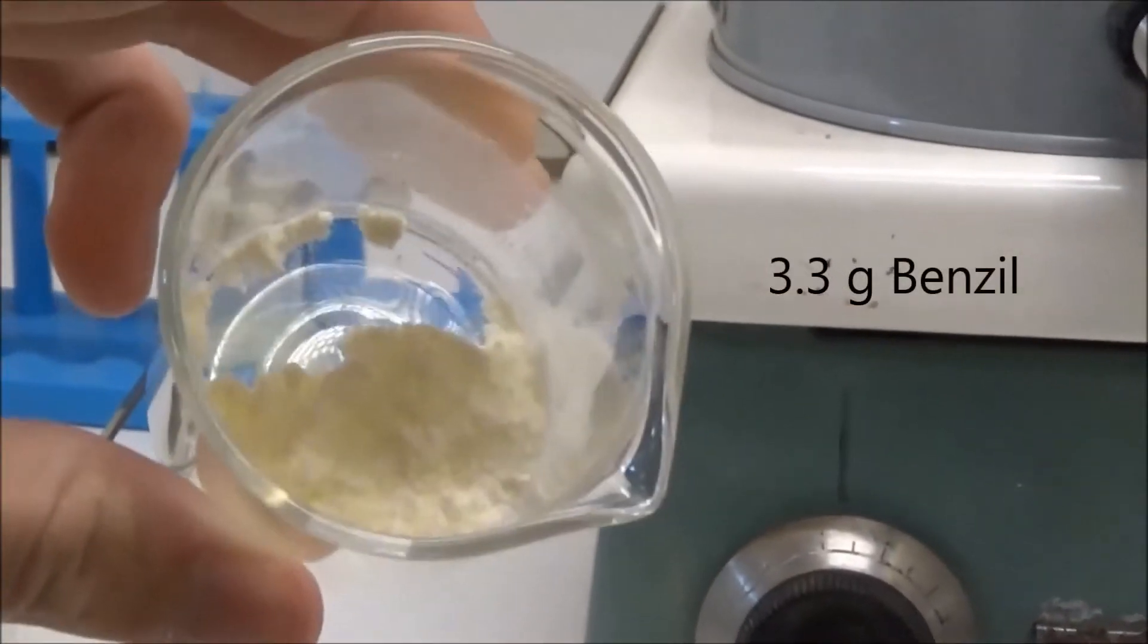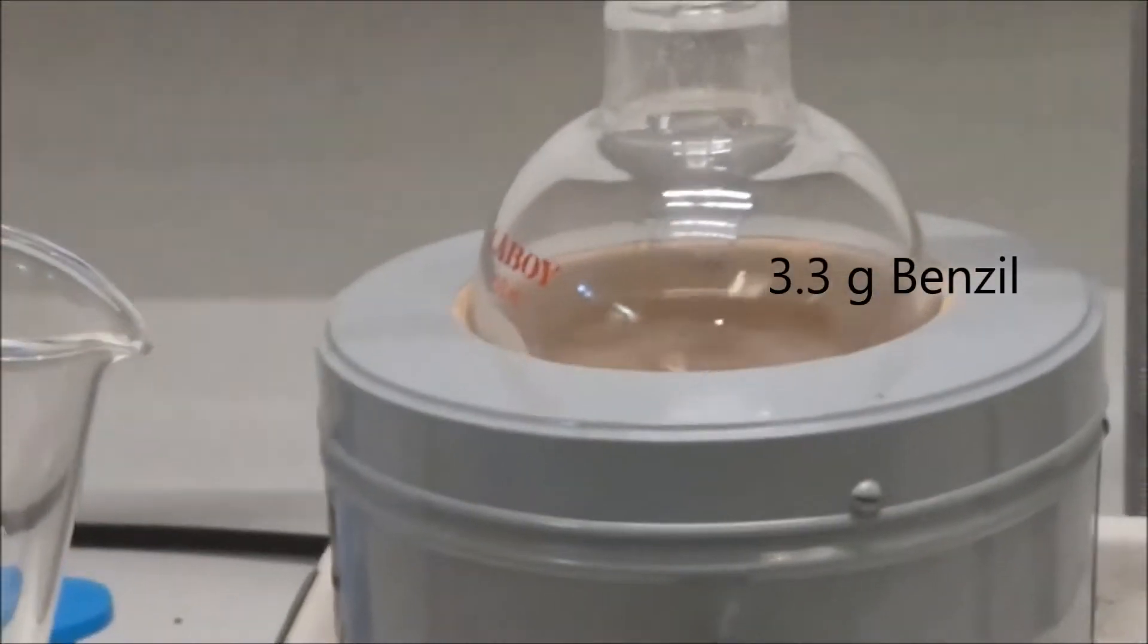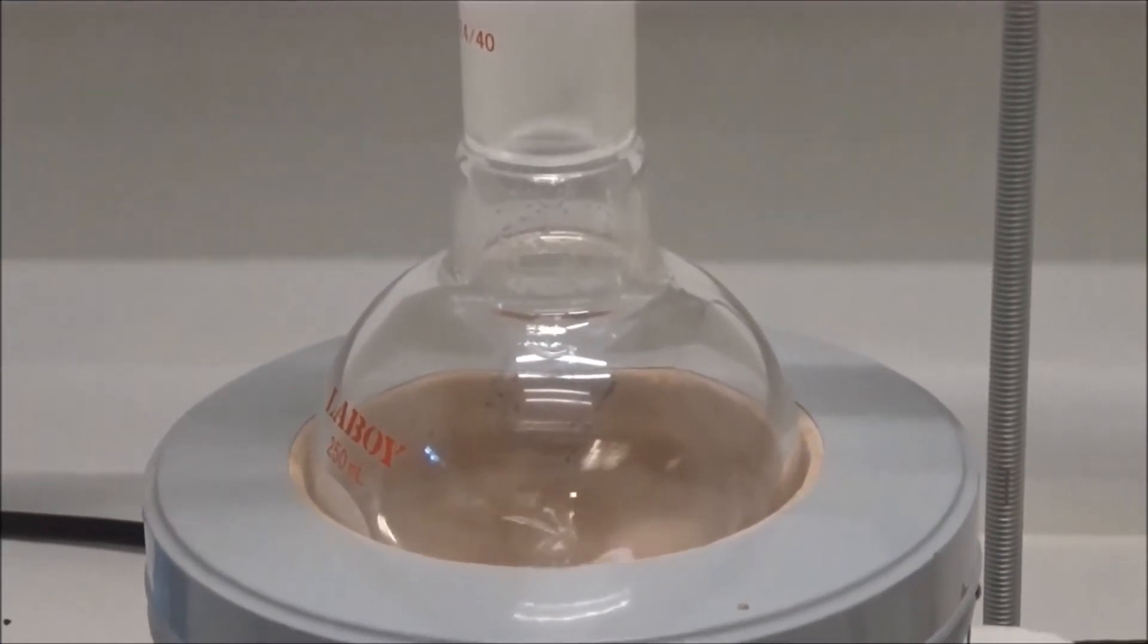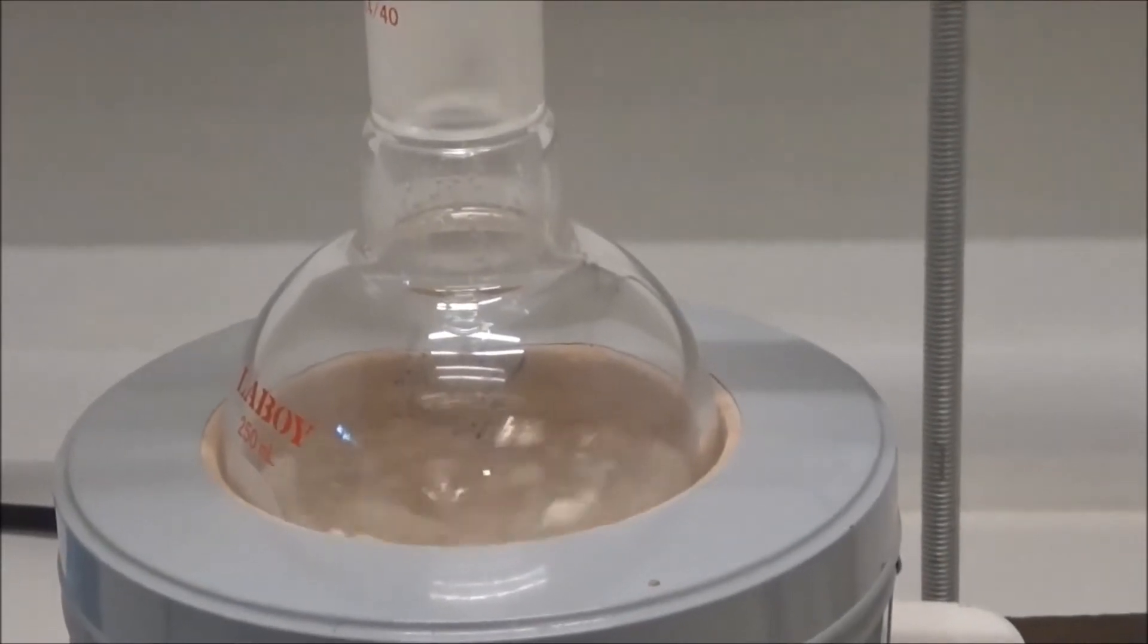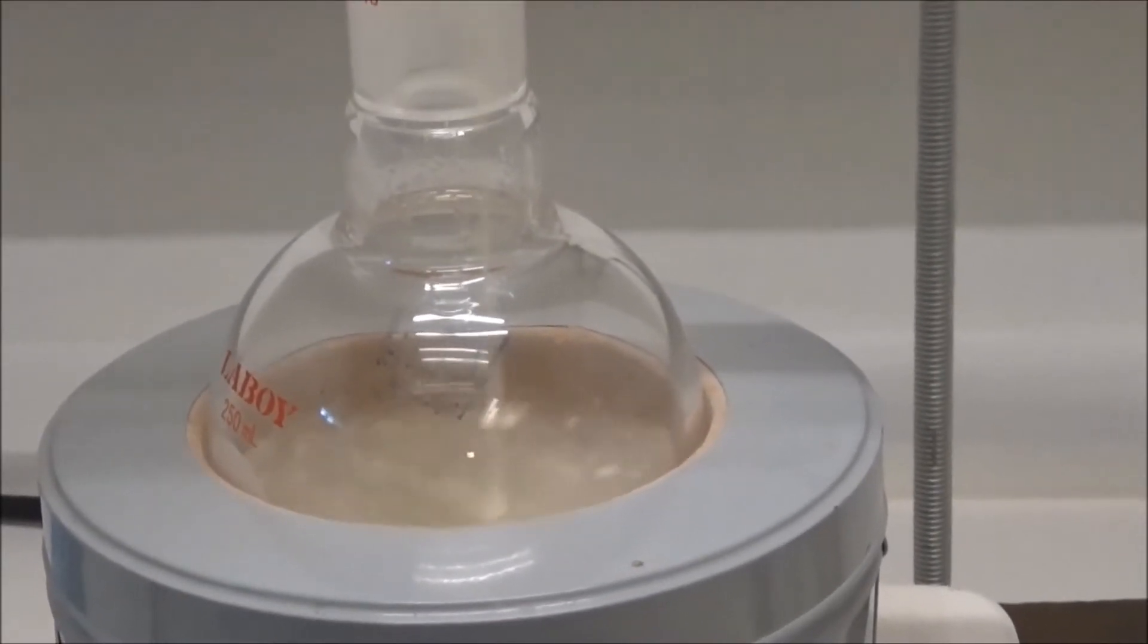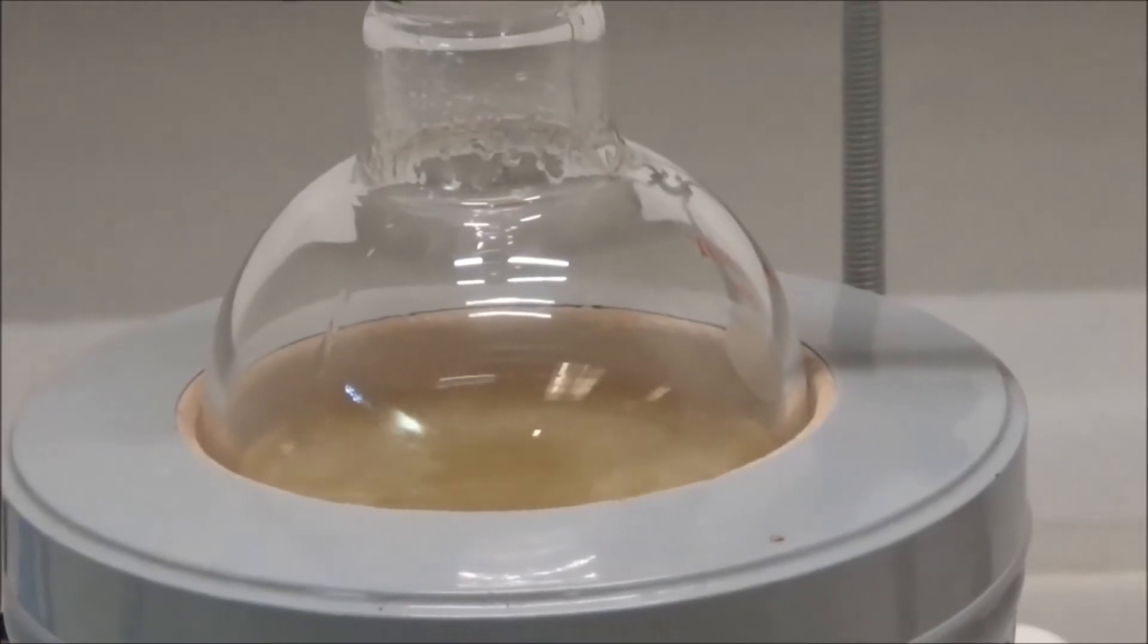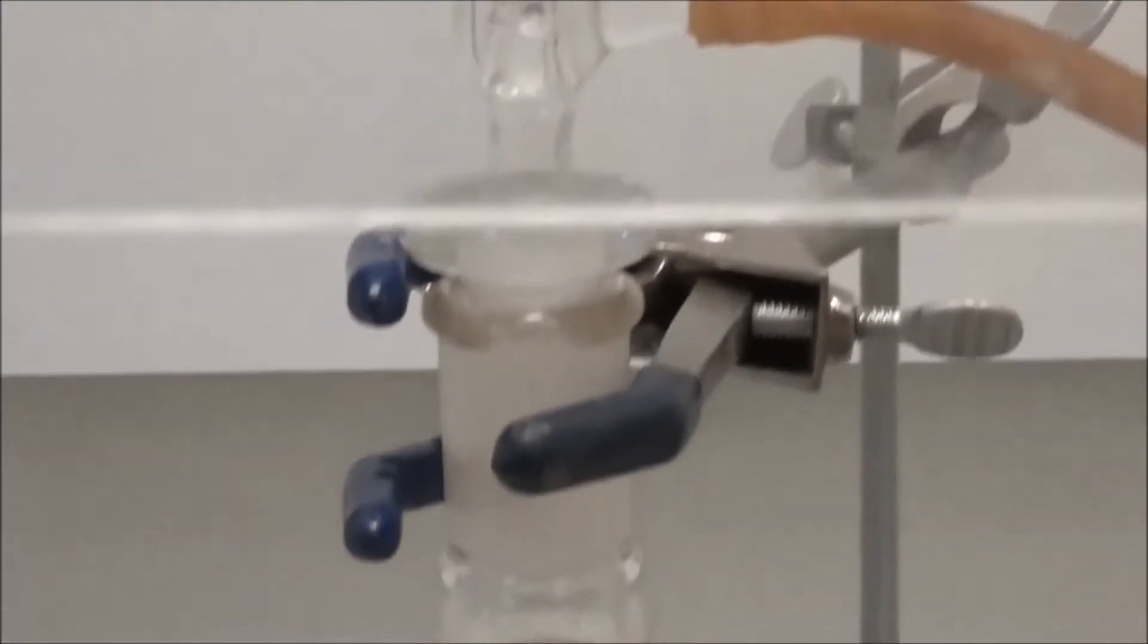I next added 3.3 grams of benzyl. This was followed by 1 milliliter of benzaldehyde. I attached a reflux condenser above the flask and heated the contents to boiling.